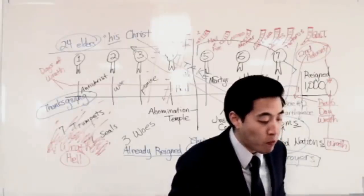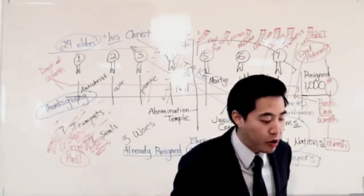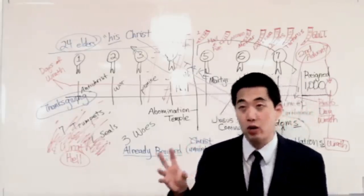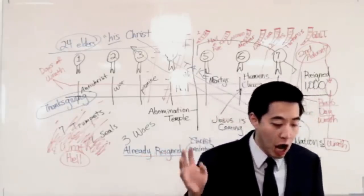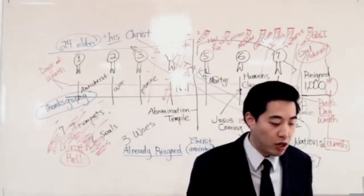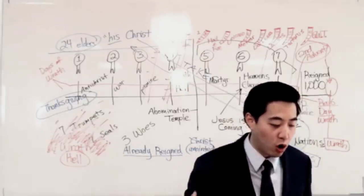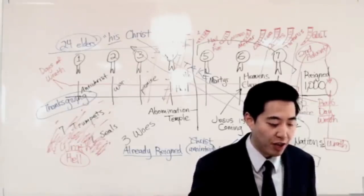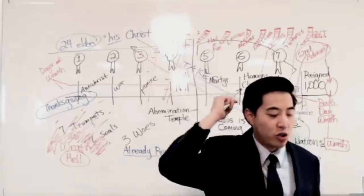Revelation chapter 12 verse 1 says there appeared a great wonder in heaven. Now there's another wonder in heaven: a woman clothed with the sun and the moon under her feet, and upon her head a crown of 12 stars.